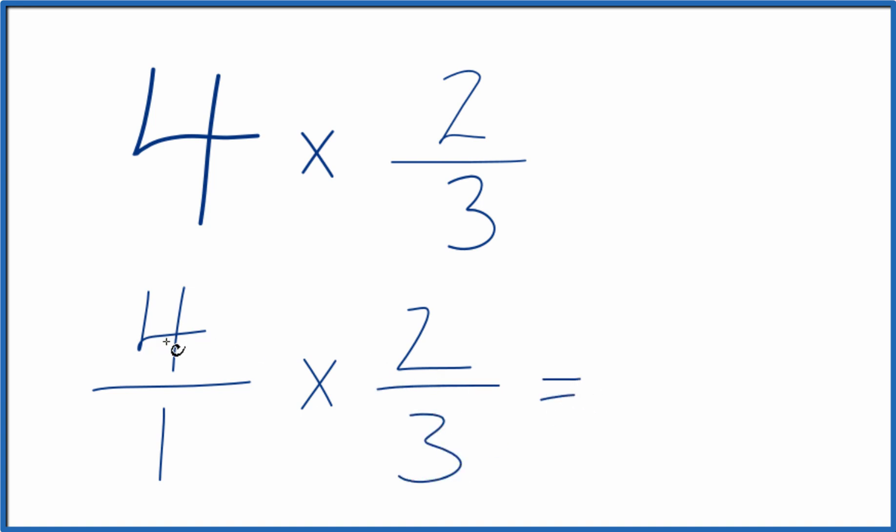And when we multiply fractions, we multiply the numerators and then the denominators. 4 times 2 is 8, 1 times 3 is 3.